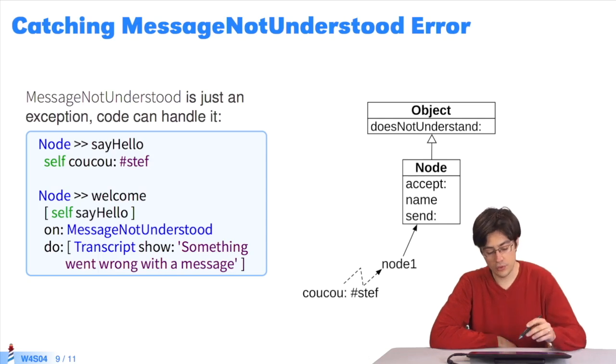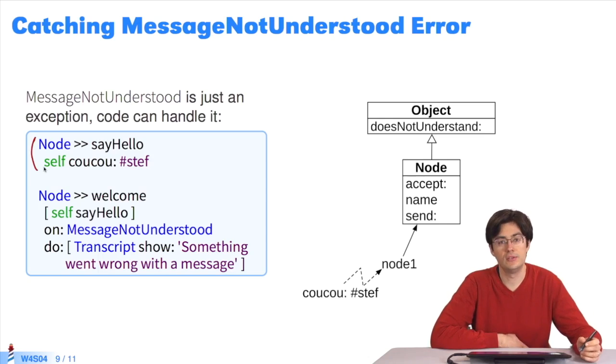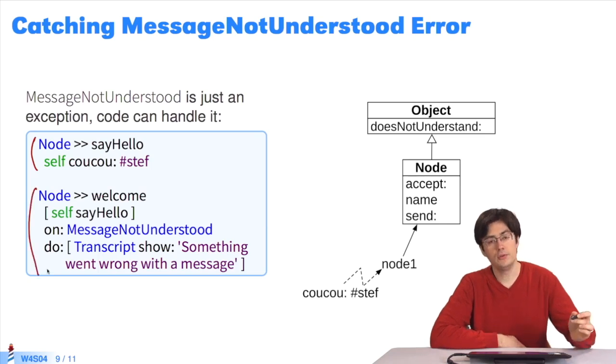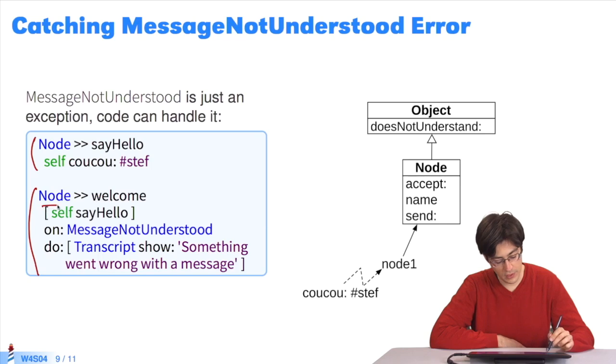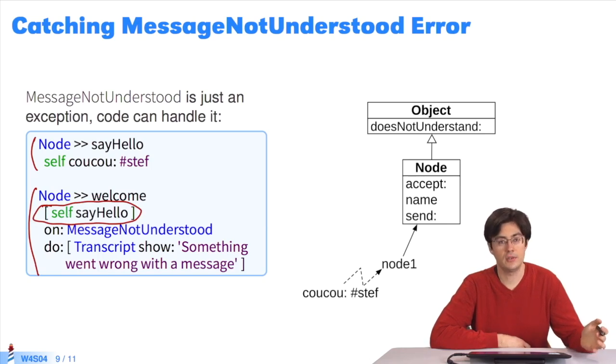In this example, we return to the class Node. We have a sayHello method in Node, which sends a cuckoo message to the receiver or self. There's also a welcome method that sends a sayHello message to self. It provides special handling in the context of a misunderstood message. If a message is not understood, it will be handled.